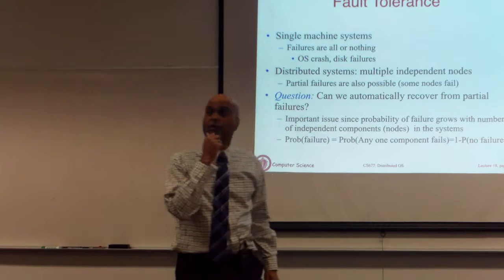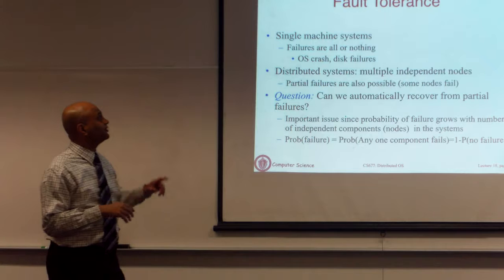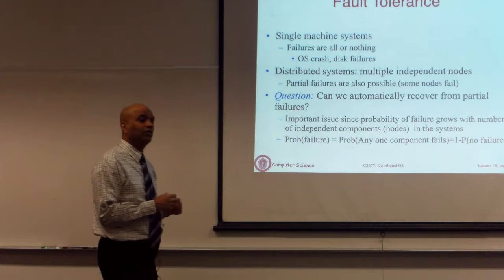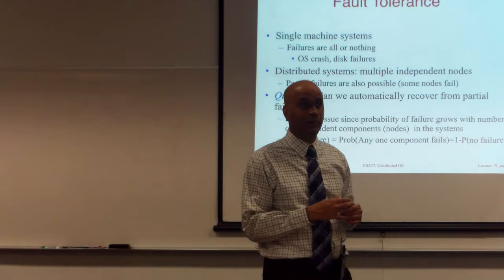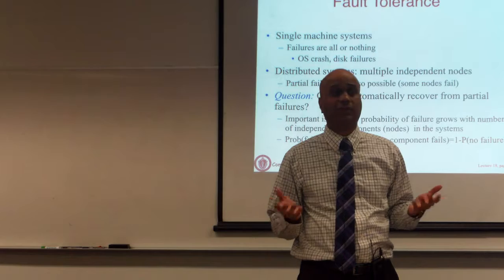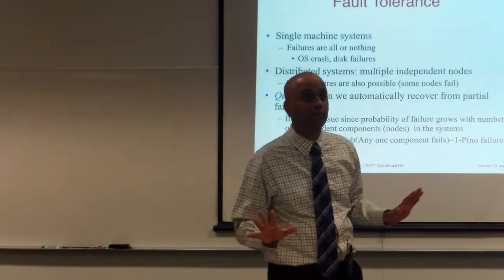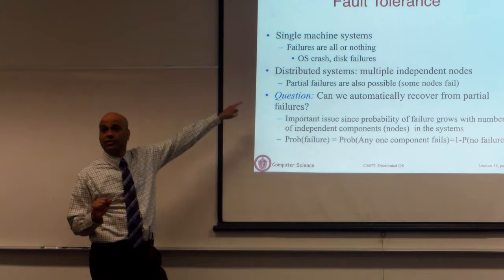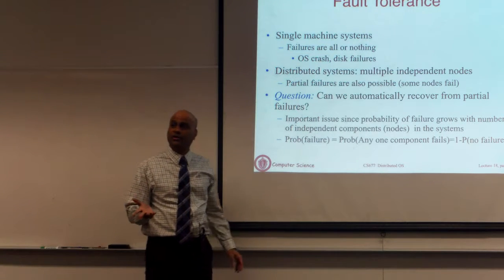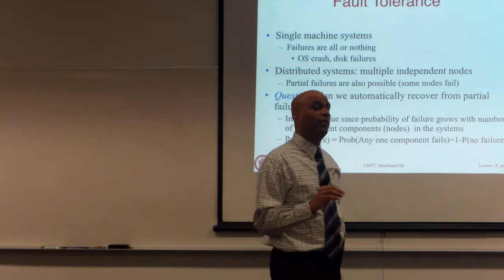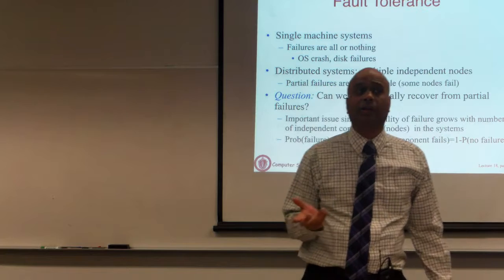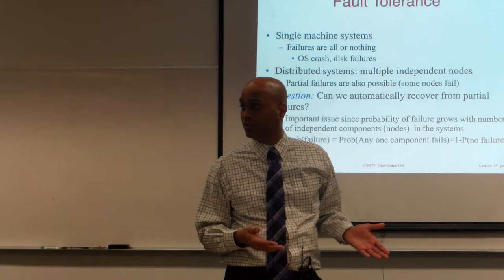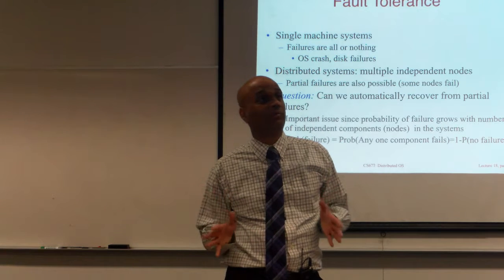In a single machine system, when it is up it functions as expected. If there is an OS crash, it stops functioning. In a distributed system, if you have designed your system well, if one or more nodes fail, the other nodes can take over the task of the failed node and your system will continue to function. In lab 3, one front-end node will fail and you are expected to have the other node take over, and if the first node comes back, it does recovery.